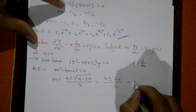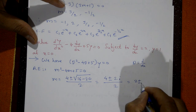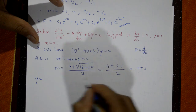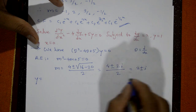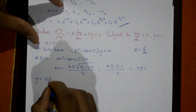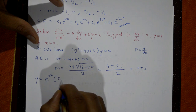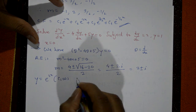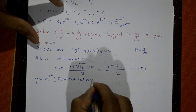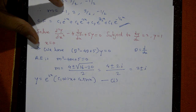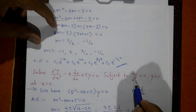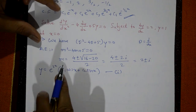So m = 2 ± i. These are complex roots with α = 2 and β = 1. The general solution is y = e^(2x)(c₁ cos x + c₂ sin x). Call this equation number one. The condition dy/dx is given, so differentiate equation number one.